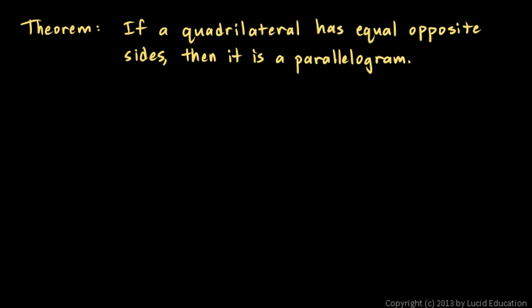Here is the next theorem that we will prove: if a quadrilateral has equal opposite sides, then it is a parallelogram. We've already seen the converse — if it is a parallelogram, then it must have equal opposite sides. But this is a separate idea. Just because something is true doesn't mean its converse is true, so this idea requires its own proof. We will start with a quadrilateral that has equal opposite sides and show that it must be a parallelogram.